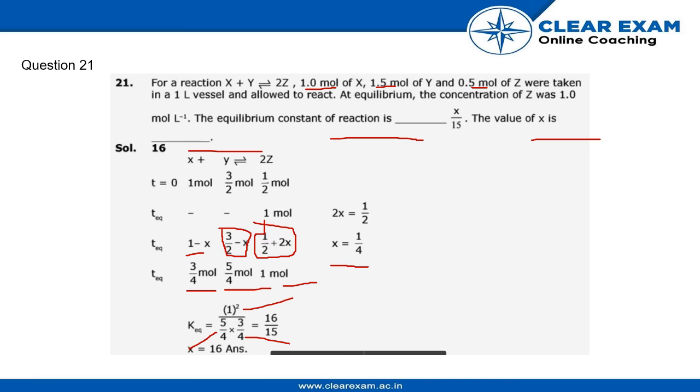After putting the values of concentration of x, z, and y respectively, the answer would be 16/5. So by solving it, the answer would be 16 by 5 or x = 16 M/5.